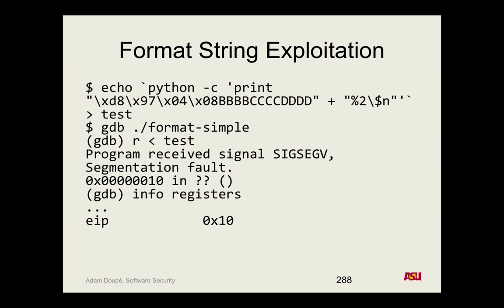Now we have our goal — we're changing EIP to what we want, but we don't want it to be 16. We want it to be the address of our shellcode. Some shellcode addresses are around 0xFFFFCAF5 — that's a very large value, probably negative as a signed integer. How did we get 16? That was the number of bytes written. So why not use field width to output 0xFFFFFD01 or whatever our shellcode address is, minus 16? Because we're calling fprintf, those bytes go into the file — not stdout — so temp log would need to be 4.2 gigabytes. That's not practical.